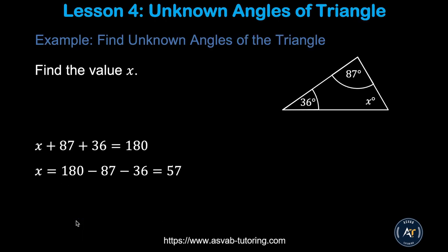Now we'll learn how to find a missing angle of a triangle. A triangle's angles sum to 180 degrees. If two angles are 36° and 87°, you add them together and subtract from 180, giving x = 57 degrees.